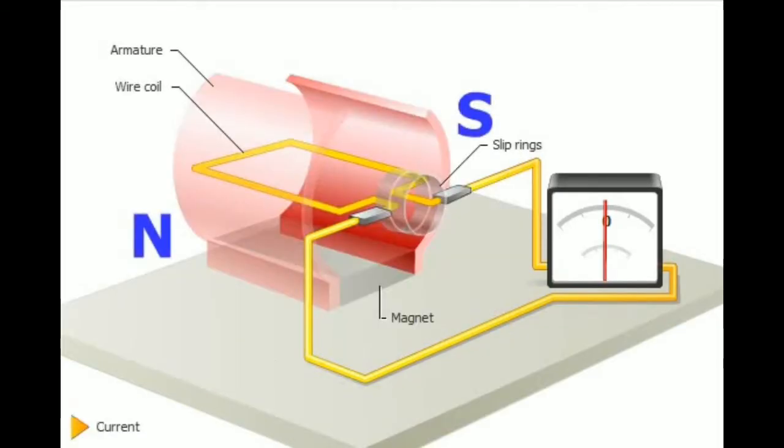An armature, consisting of coils of wire wrapped around an iron core, is rotated in a static magnetic field.